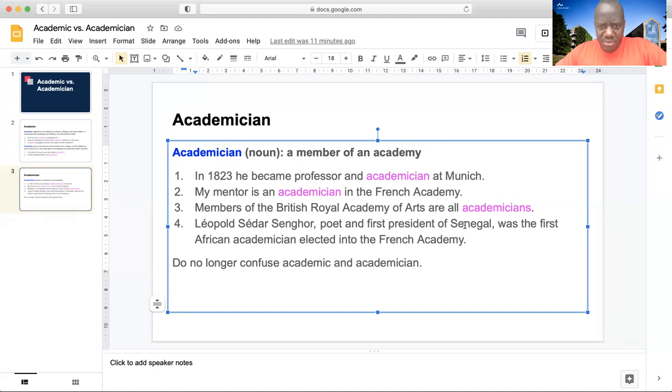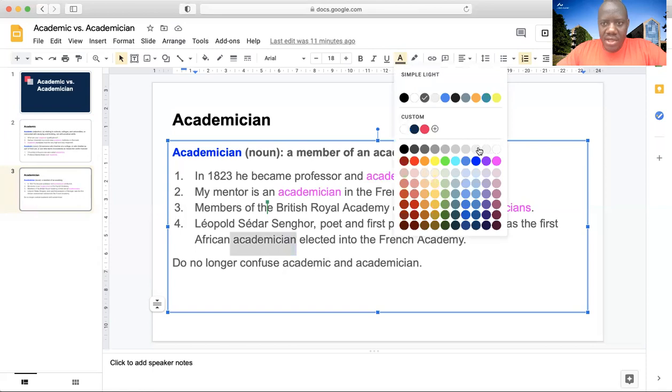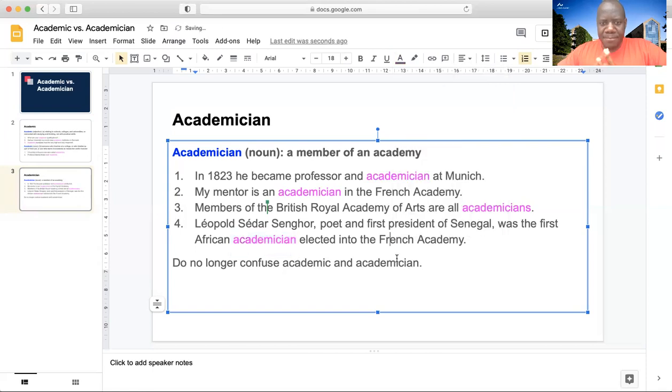Leopold Seda Senghor, a poet and the first president of Senegal, was the first African academician elected into the French academy. He was actually the first black African elected into the French academy, the Académie Française, which is like the gendarmes, the police officer, the authority